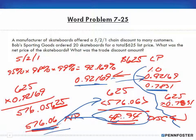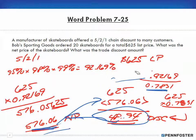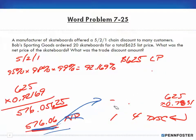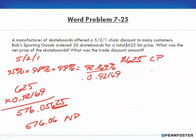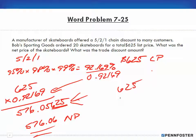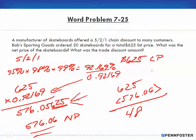Let me quickly recap problem 7-25, since the screen was a bit messy. I had a 5/2/1 discount, so I multiplied the inverses together to get 92.169%, or the decimal equivalent 0.92169. I multiply that by the $625 list price to get a net price of $576.06. Then taking $625 minus $576.06 gives a discount amount of $48.94.